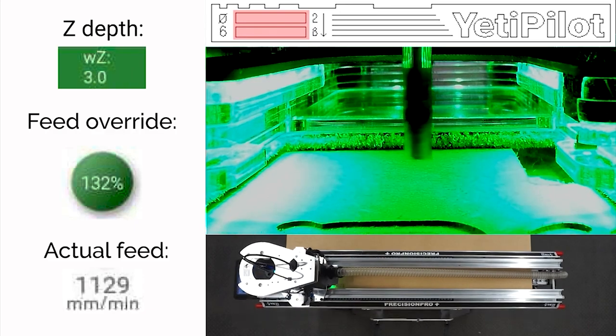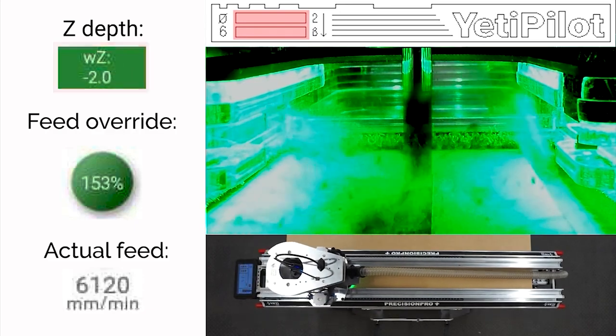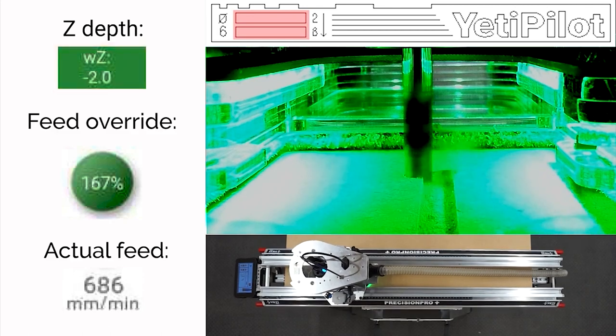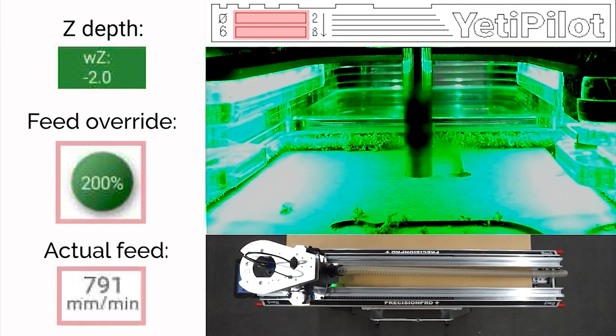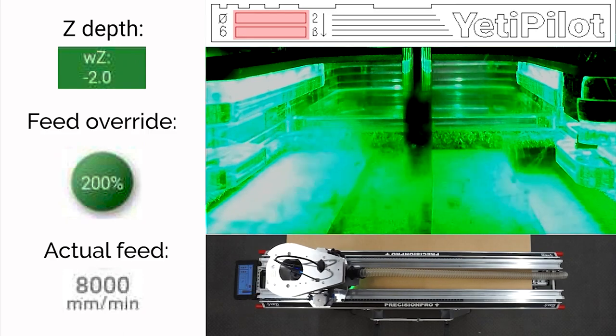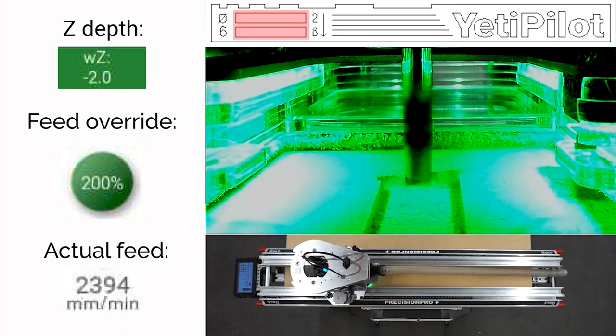The next pocket is much shallower, it's only two millimeters deep and you can see immediately Yeti Pilot is saying come on let's go quicker and it's overriding that feed to a full 200%.